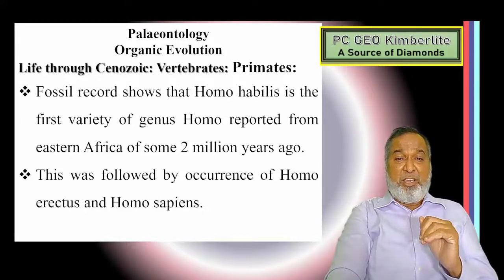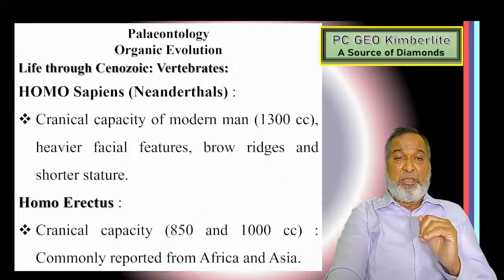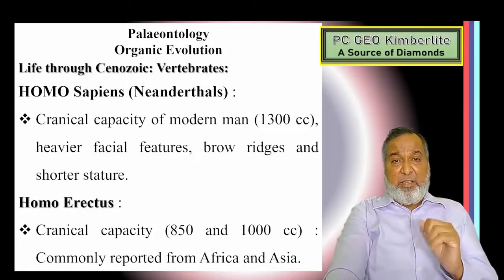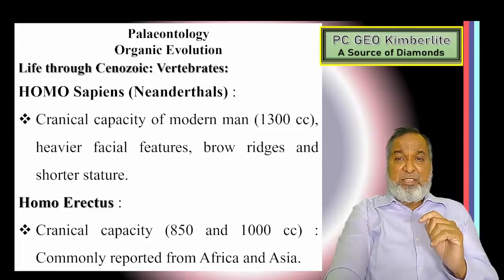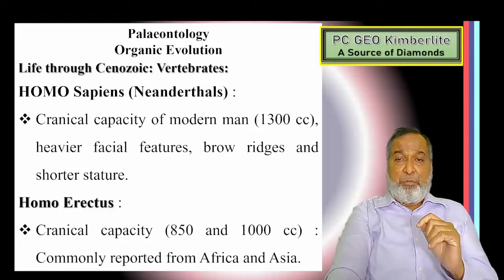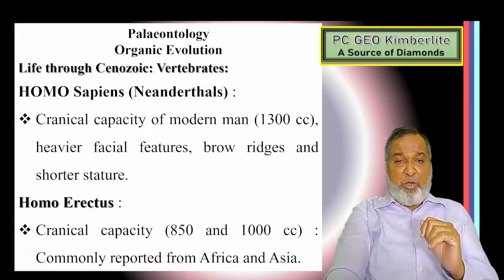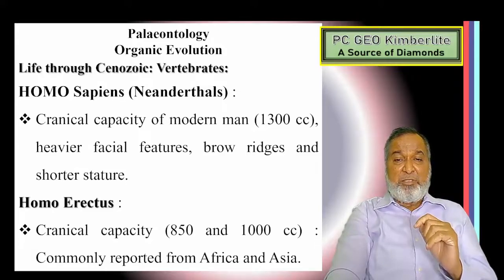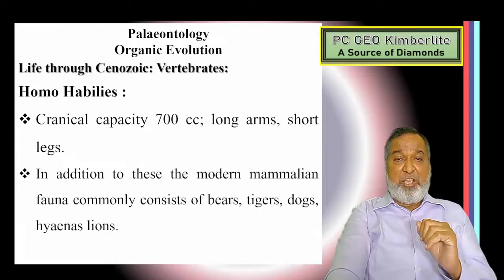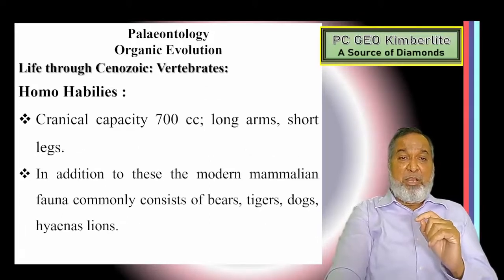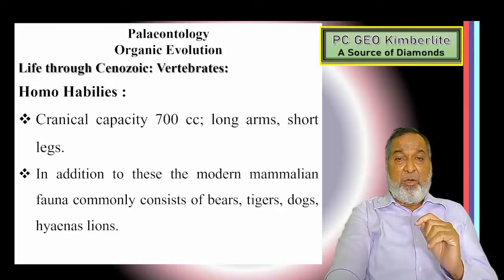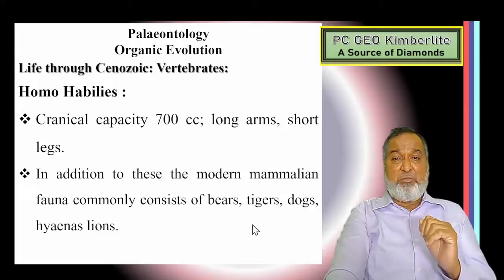Homo habilis was followed by Homo erectus and Homo sapiens. The cranial capacity of Homo sapiens is 1300 cc, with heavier facial features, brow ridges, and shorter stature. Homo erectus had a cranial capacity of 850 to 1000 cc and is commonly reported from Africa and Asia. Homo habilis had a cranial capacity of 700 cc, with long arms and short legs.